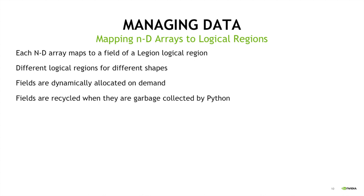Now let's talk about data specifically, because that's really the crux of distributed execution — how you partition and distribute your data across a distributed machine. Each ND array in NumPy maps to a field of a Legion logical region. We can dynamically create logical regions and dynamically allocate fields on the fly in Legion, creating logical regions with different shapes corresponding to NumPy array shapes. Once fields are garbage collected and no outstanding tasks are using them, we're able to recycle them.